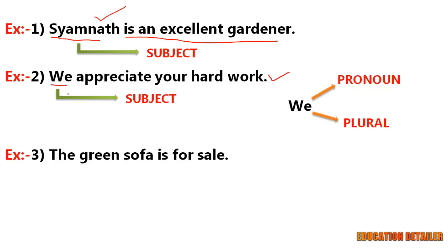In the third example, the green sofa is for sale. Here the sentence is about the green sofa, so it's easy to say that it is the subject. This is a noun and also singular. Now I am sure you have understood what the subject is, but what type of subjects they are? Let me explain.